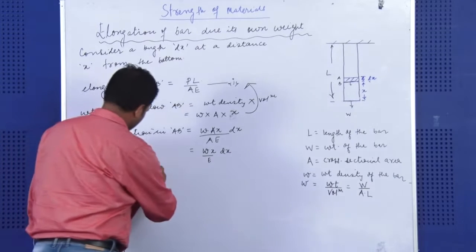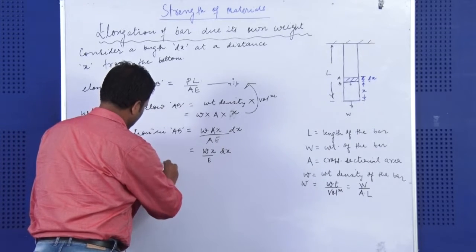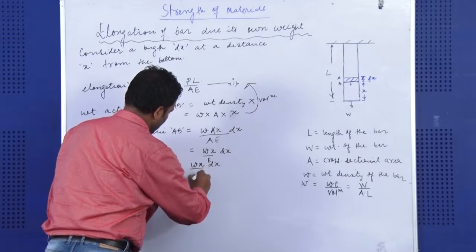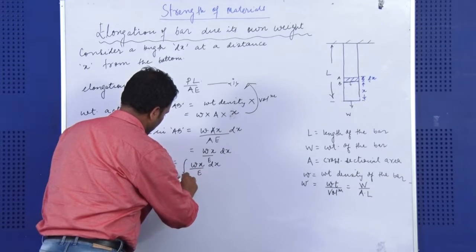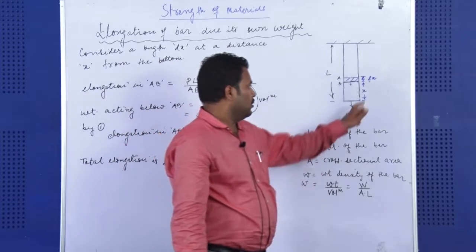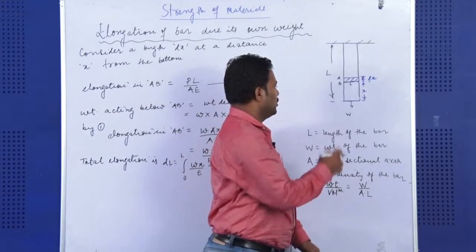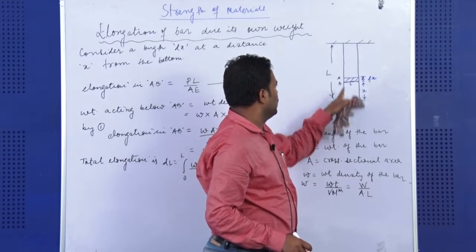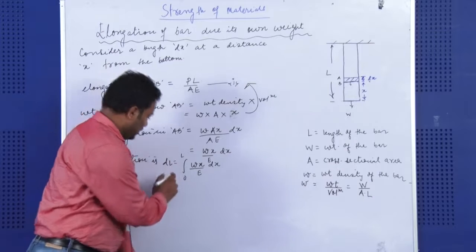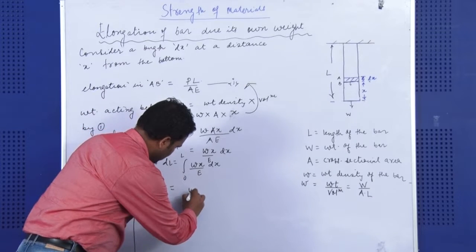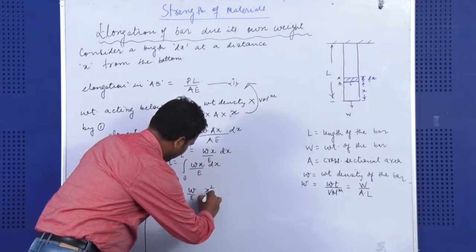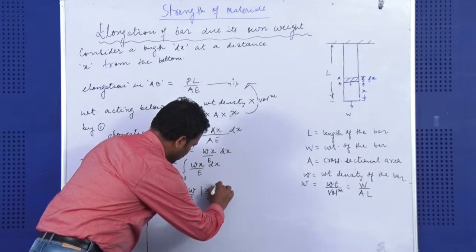Total elongation is equal to DL is equal to WX DX by E between the limit 0 to L. 0 to L are limit of the value X, since at the bottom most point X is equal to 0, and when we reach at the top from where the rod is hanged, the length is L. So it would be equal to W by E outside, and integration of X is X square by 2, limit is 0 to L.